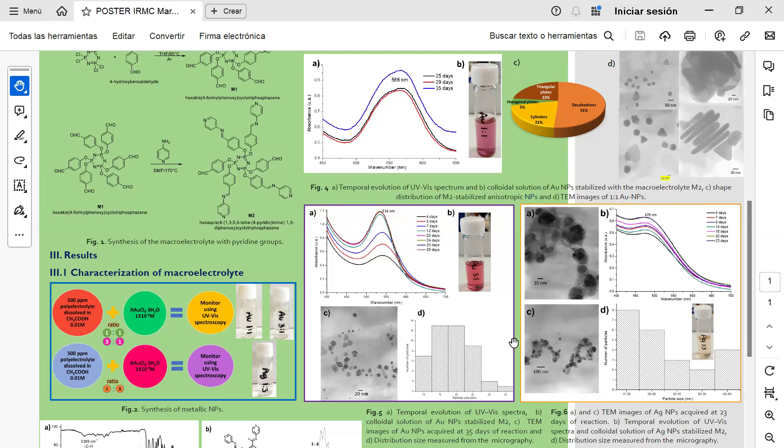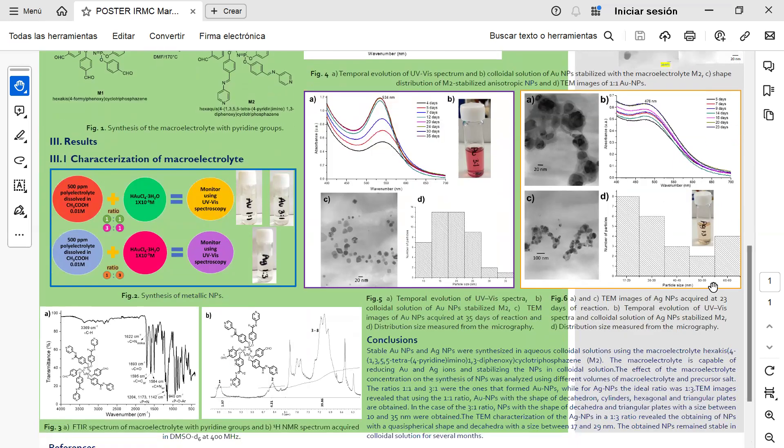The same characterization of the silver nanoparticles in the 1:2:3 ratio related to obtaining nanoparticles with a quasi-spherical shape and decahedron with a size between 17 and 29 nanometers. The obtained nanoparticles remained stable in colloidal solution for several months. Thank you so much for your attention.